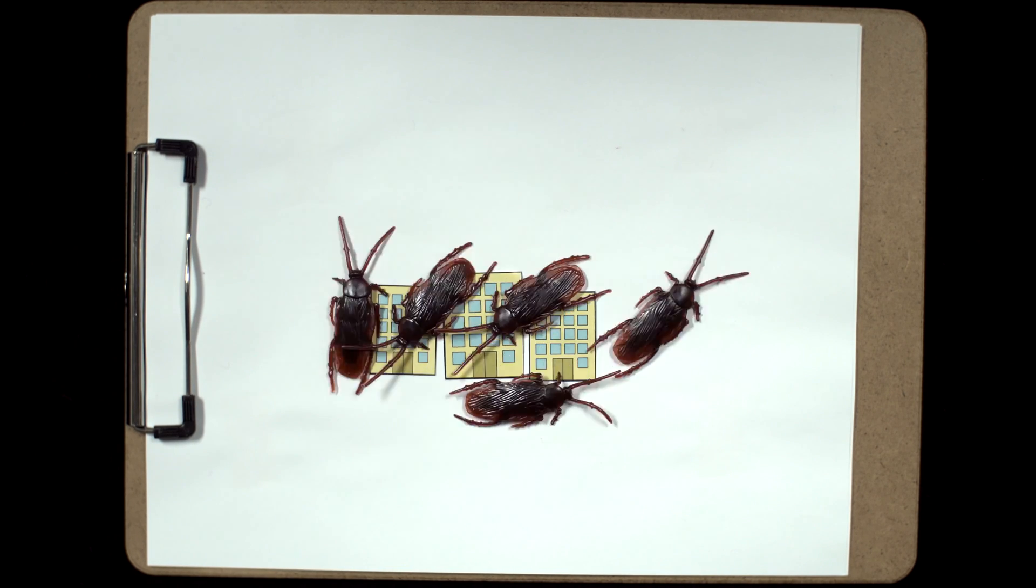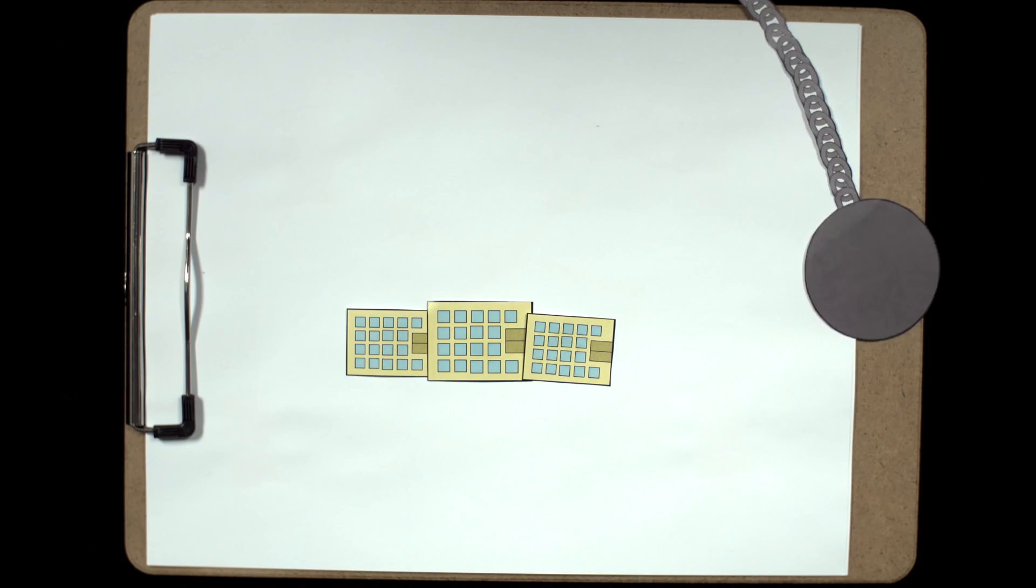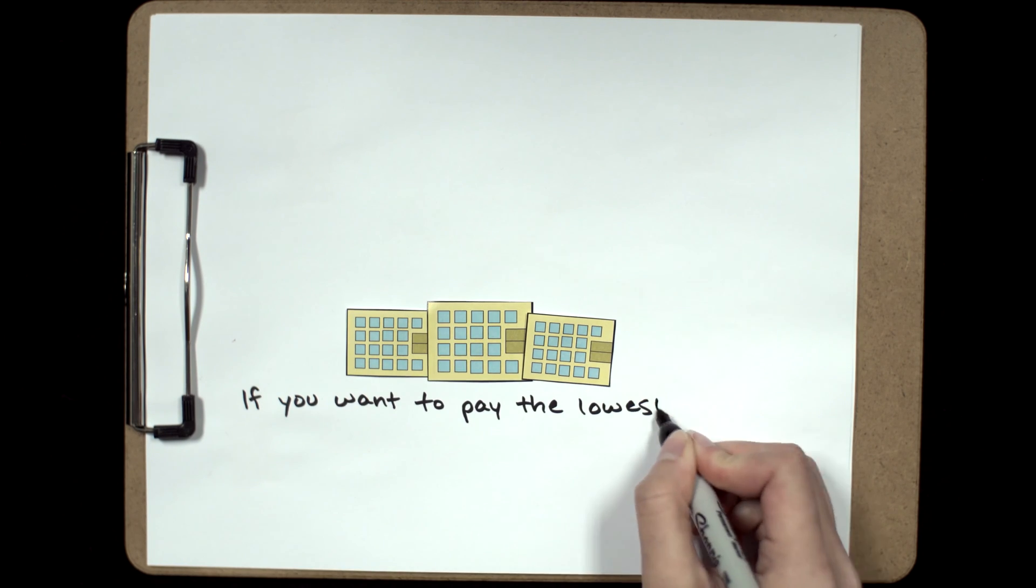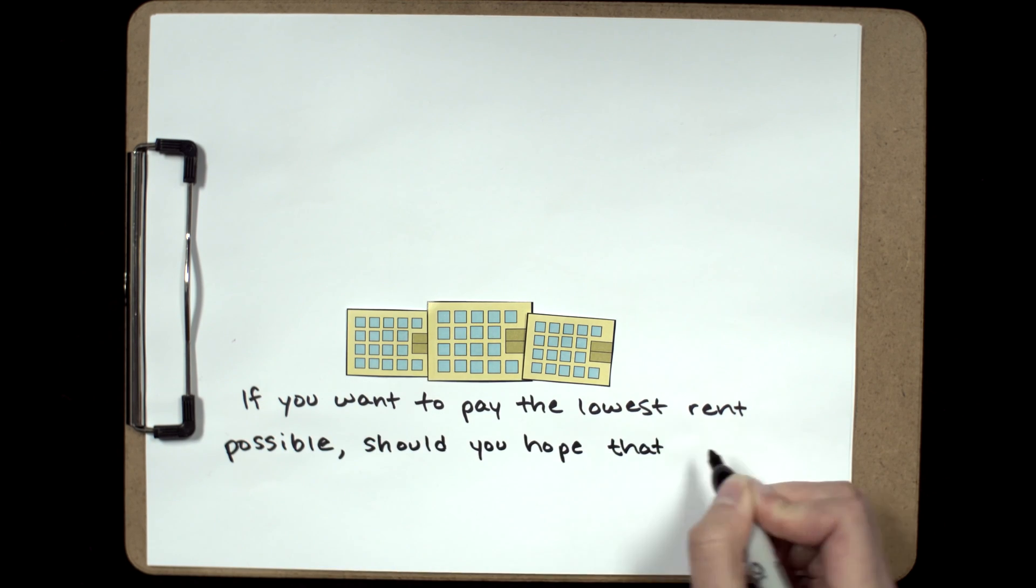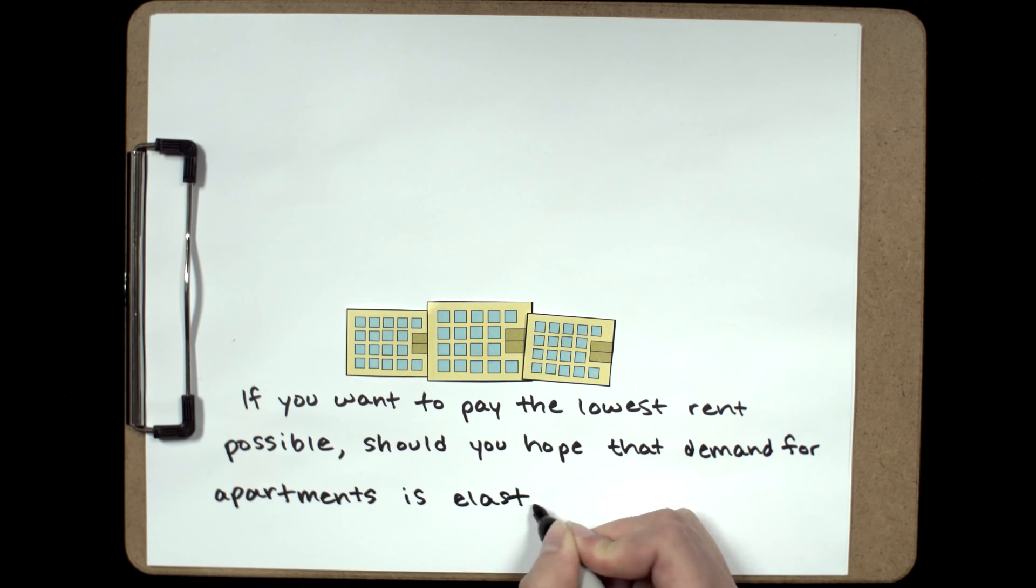Let's try one more example to ensure you've got the hang of it. Now let's say the local government announces that thousands of apartments close to campus are uninhabitable and must be torn down next semester. If you want to pay the lowest rent possible in this case, should you hope that demand for apartments is elastic or inelastic?